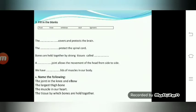Question number four: name the following. The joint in the knee and elbow. The largest thigh bone. The muscles in our heart. The tissue by which bones are held together.